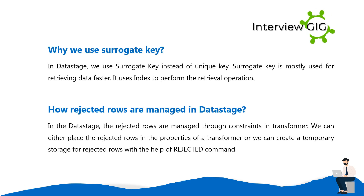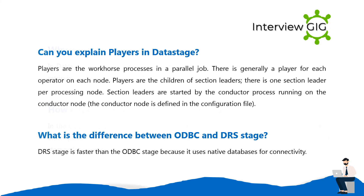Why do we use surrogate key in DataStage? We use a surrogate key instead of a unique key. Surrogate key is mostly used for retrieving data faster; it uses an index to perform the retrieval operation. How are rejected rows managed in DataStage? In DataStage, rejected rows are managed through constraints in Transformer. We can either place the rejected rows in the properties of a Transformer or create temporary storage for rejected rows with the help of the rejected command.